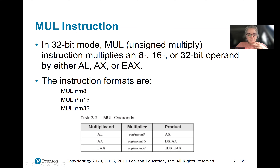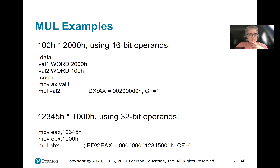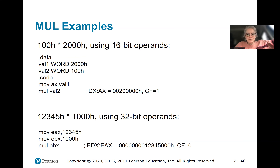The last example is for 32-bit operations. In this example, we're multiplying 100 hexadecimal times 2,000 hexadecimal, using 16-bit operands. The 2,000 is put into a variable, and 100 into another variable. We move variable 1 into AX because the MUL instruction expects the multiplicand to be there.